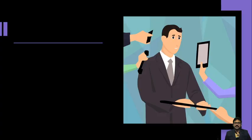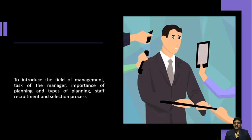The first course objective is to introduce the field of management — the task of a manager, importance of planning, types of planning, and staff recruitment and selection process. As an engineer, you might wonder why we are learning this subject. But one day you are going to become a manager in your company, or at least manage certain people working under you. This is where planning becomes necessary for all jobs after engineering.